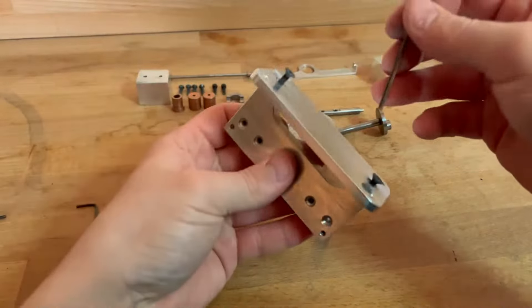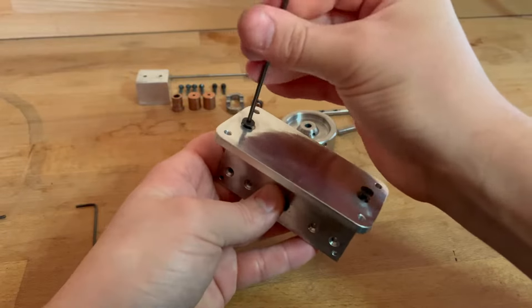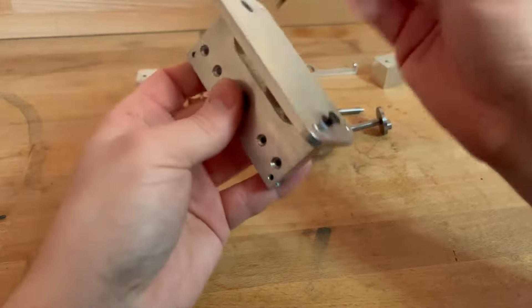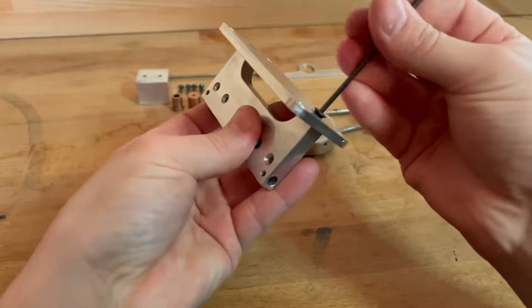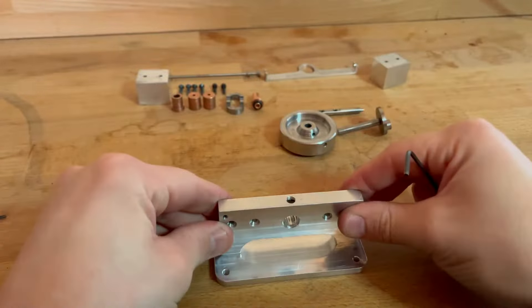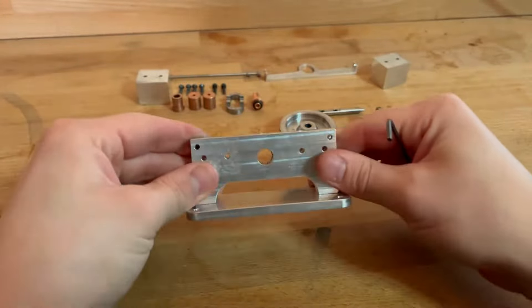We'll get the allen key and tighten that up onto there. So there we have the base and the body assembled.